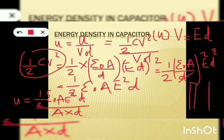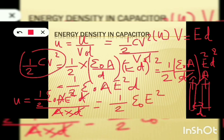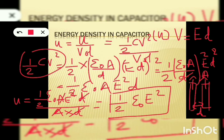After cancellation, the expression for energy density becomes: u equals half ε₀ E². So the energy density depends upon the electric field E.